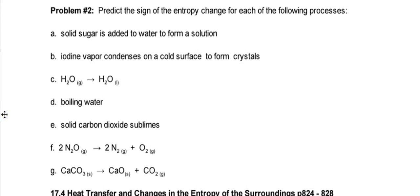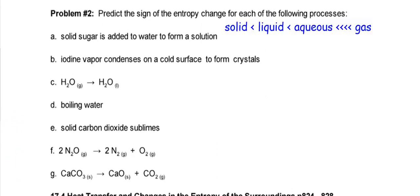So then in problem number two, decide the sign of the entropy change. So if your final has more disorder than your initial, it's a positive. If your final is more orderly than the initial, then it's a negative. So go ahead and pause this and figure out A through G.